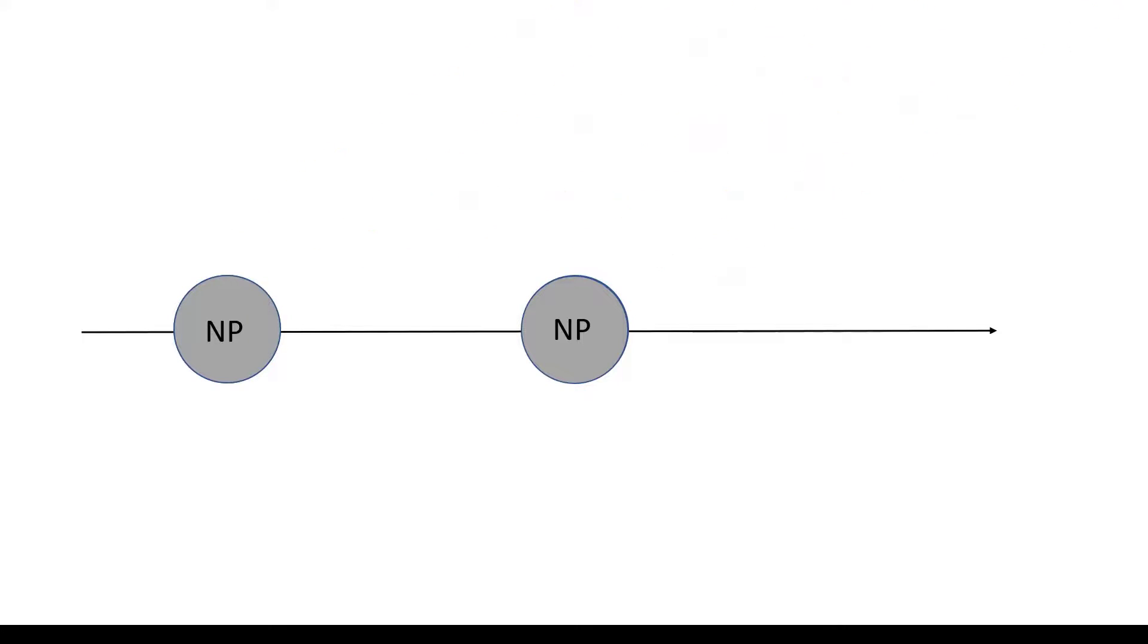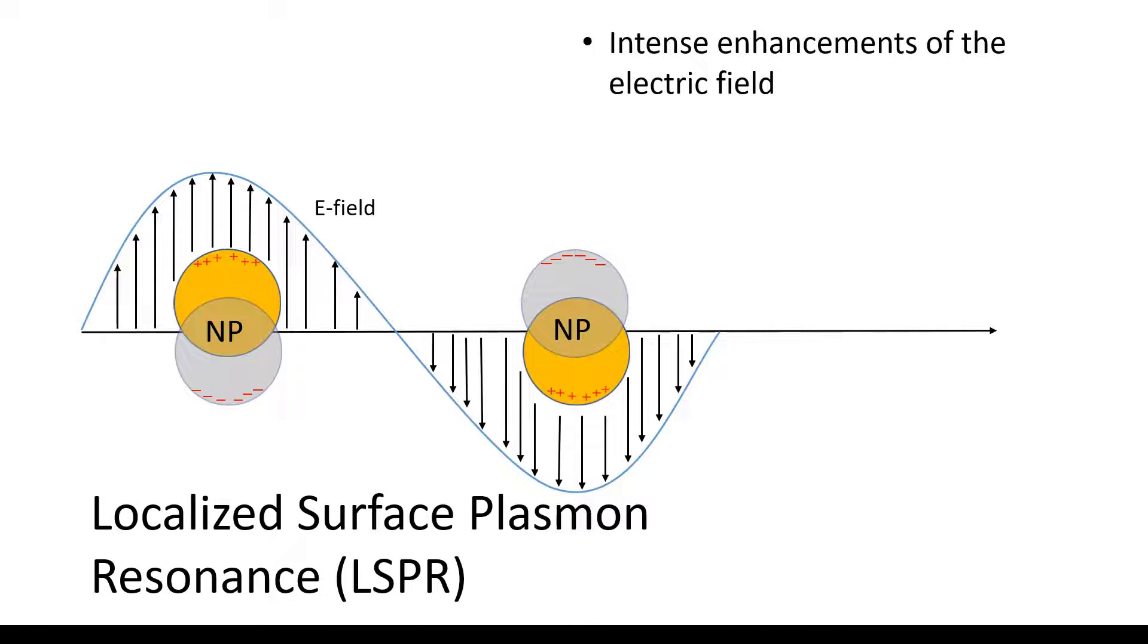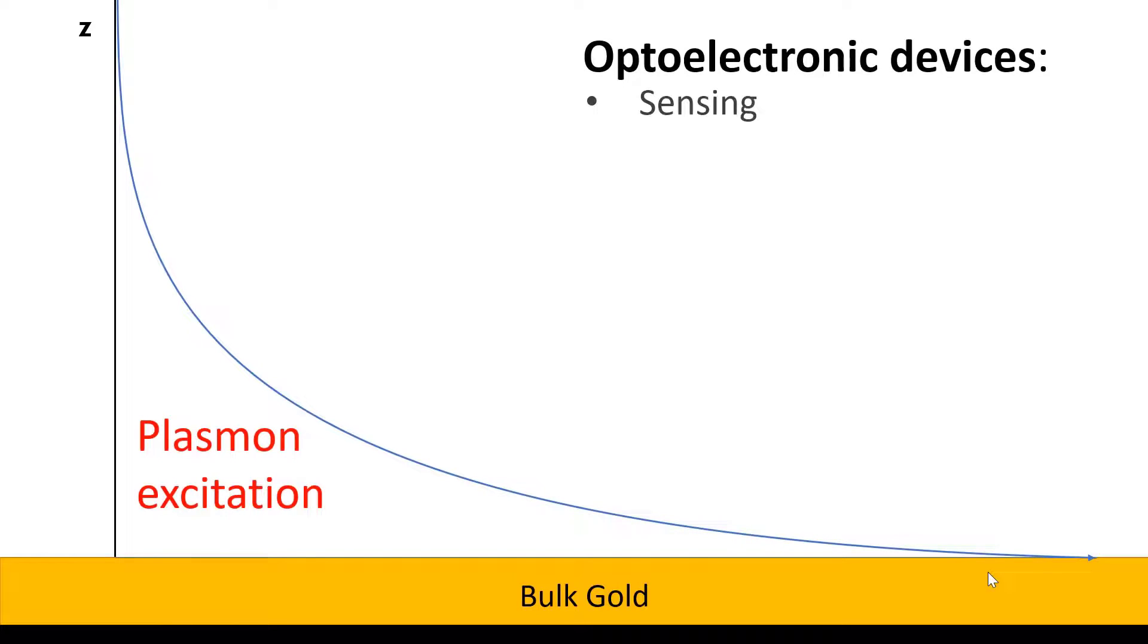LSPR occurs when conduction electrons from a nanoparticle are excited, forming a localized plasma cloud having an enhanced electric field and increased extinction cross-section. This plasma excitation is of interest due to extensive applications.